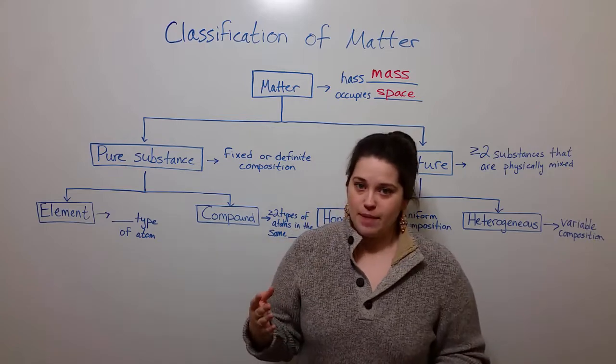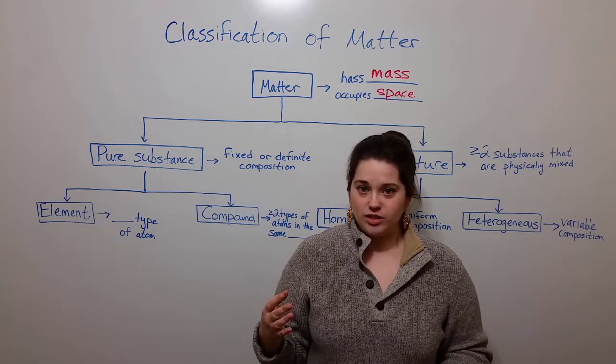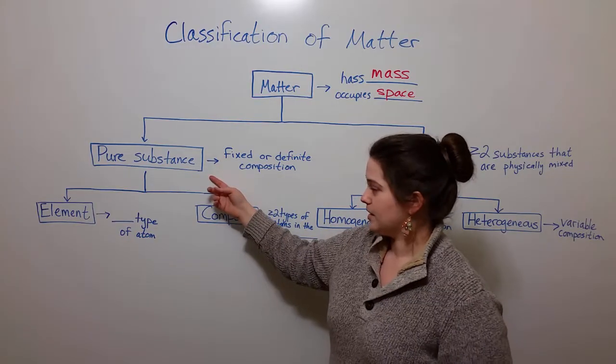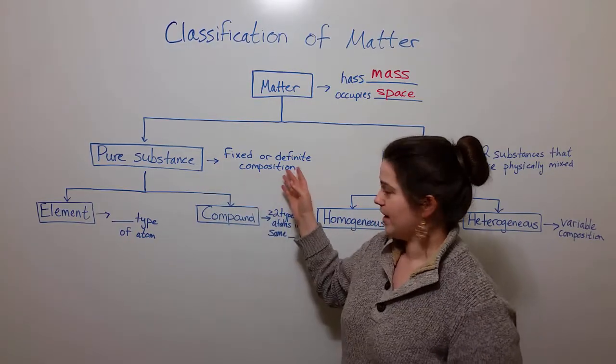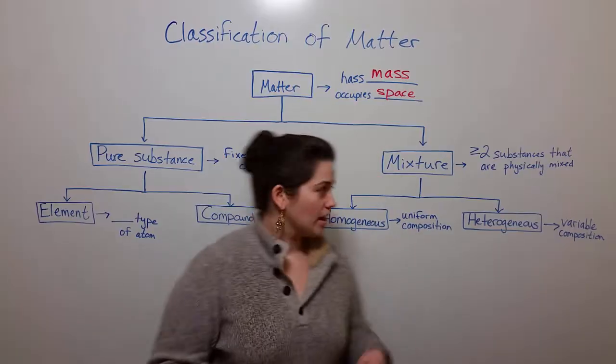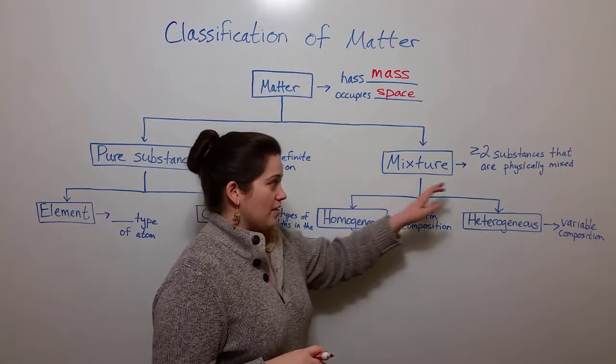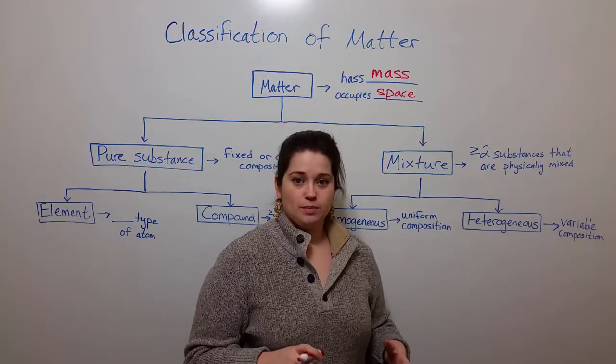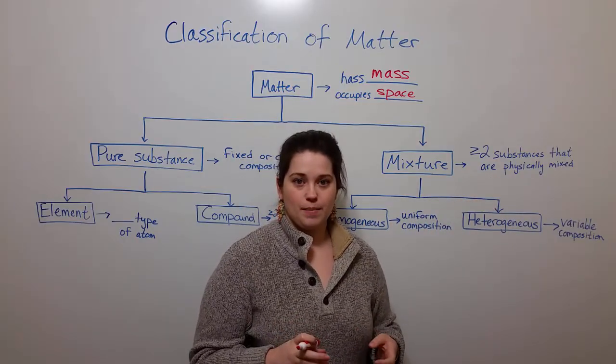Now broadly, matter can be broken down into two different subdivisions. These are pure substances, things that have a fixed or definite composition, and mixtures, things that are made up of two or more substances that are physically combined but not chemically combined.